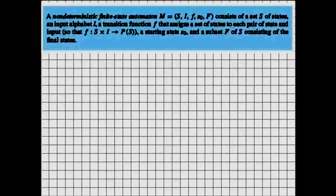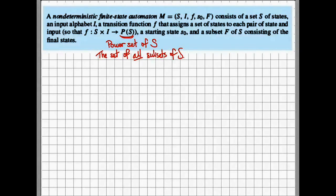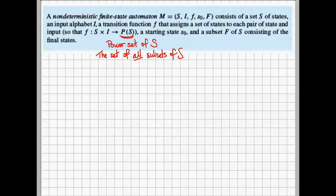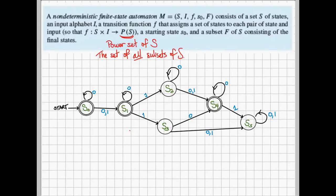But there is one big difference in a non-deterministic finite state automata in that the function which matches a state and an input to a new state is now going to be a power set of all the states, so the machine will have to make a choice as to which option to follow. To make this a little bit clearer, let me give you an example of such a machine.